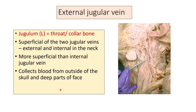The word jugulum is derived from Latin which means throat or collar bone. Because these veins are located in the neck, they are called the jugular veins. The more superficial of the two jugular veins — the external and internal — are of clinical importance.